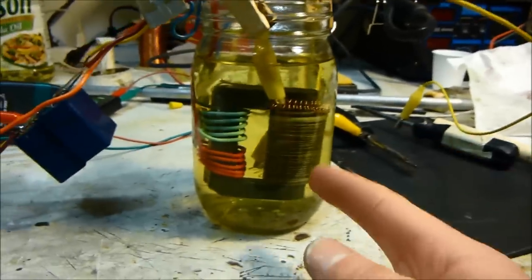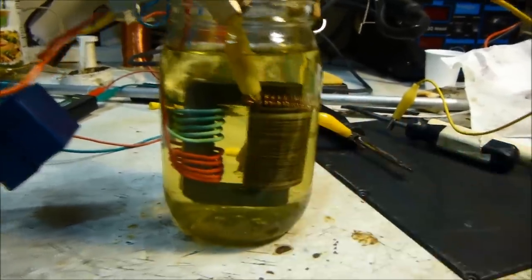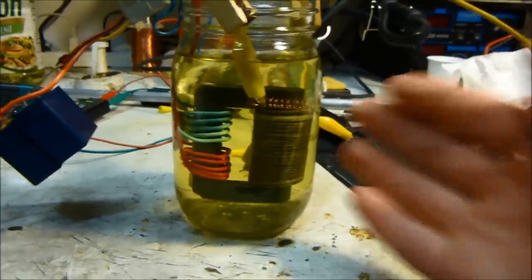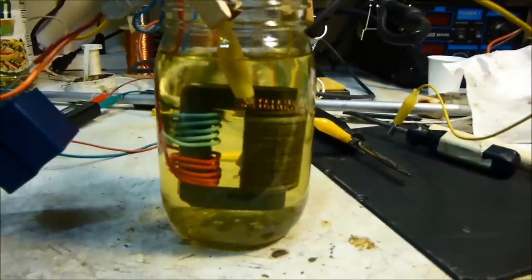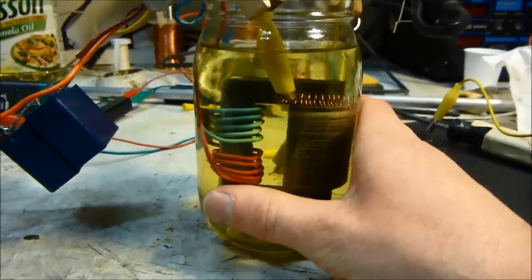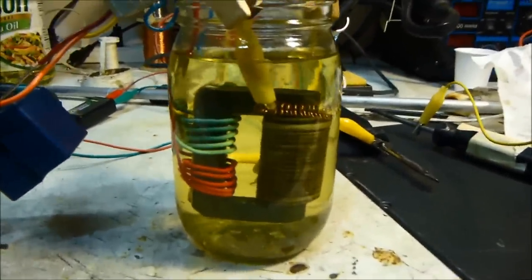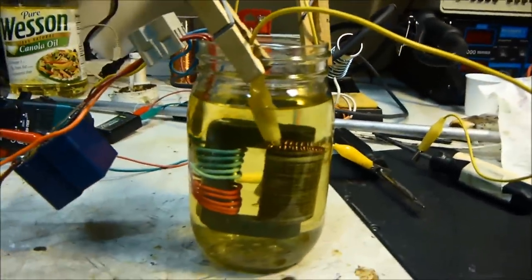But those are coming from this flyback transformer that I just made. This was really easy to make, so I'm going to show you how to make this in this video. It's made out of just an old core from a flyback transformer, some magnet wire, newspaper, and canola oil I bought at the grocery store. This is an amazing transformer, way better than the flyback transformers from TVs. You've got to make one. They're so easy. Let's get started.